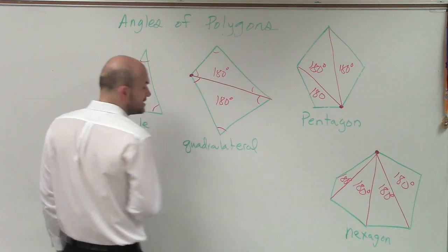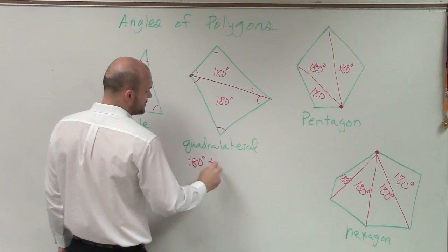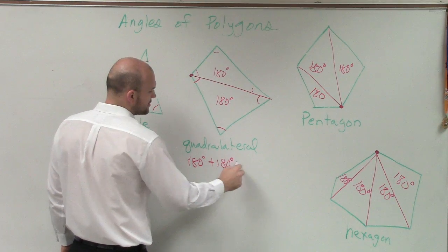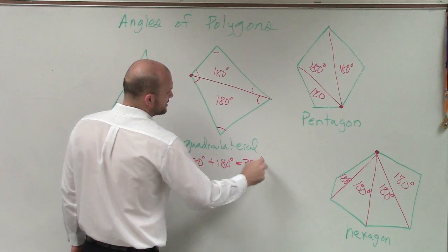So a quadrilateral, the sum of the angles in a quadrilateral is 180 degrees plus 180 degrees, which is 360 degrees.